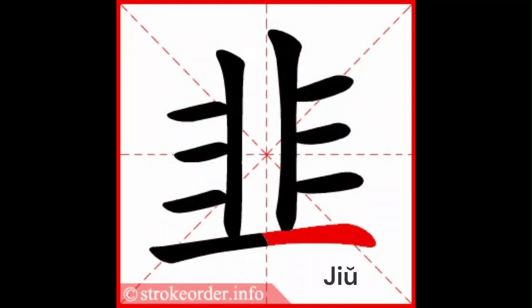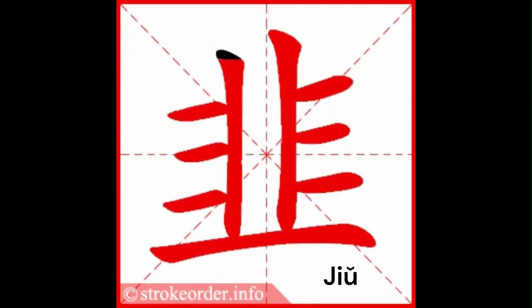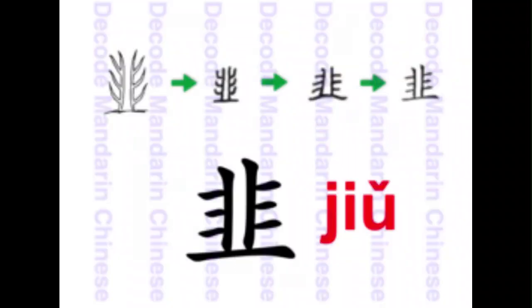This is a fun character in the Chinese language because the character 韭 was originally chives growing in the ground that gradually morphed into its modern form. This makes it easier to learn.